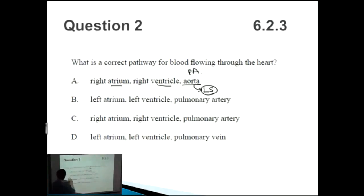If this was to be correct, it would be right atrium, right ventricle, followed by the pulmonary artery. B: left atrium, left ventricle, pulmonary artery. Once again they've mixed this up. The pulmonary artery is incorrect. You'd expect the left ventricle to actually lead to the aorta because the aorta is on the left hand side, whereas the pulmonary artery is a right-sided artery.